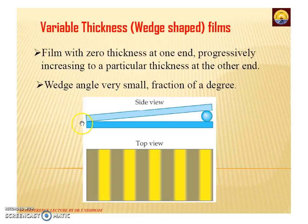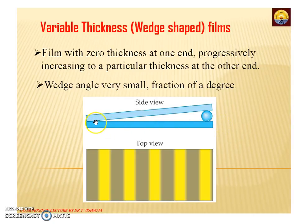Here, this is one plain glass plate and another plain glass plate; in between we are keeping an object which defines the thickness of the film. The wedge shape of the film is defined as the film with zero thickness at one end, progressively increasing to a particular thickness at the other end. The wedge angle is very small, a fraction of a degree. When this wedge-shaped film is exposed to a monochromatic source of light, we observe straight and parallel fringes.